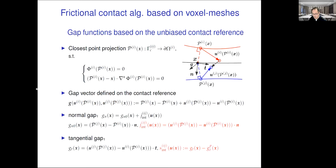Once we have the unbiased contact reference, we can define the gap function. For an integration point x on the contact reference, we employ the closest point projection to determine points p_i and p_j. After deformation, this point moves to here, and this point moves to here. The spatial vector between these two points is the gap function, times normal direction.